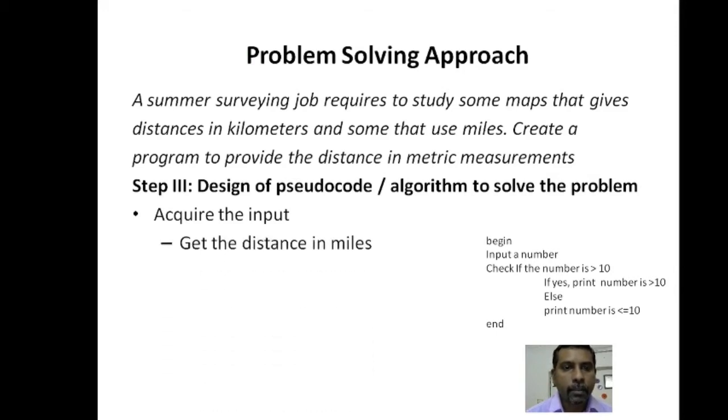First is acquire the input. In our problem, what is the input? The input is miles, so you need to acquire the distance in miles. Second step is processing or computing the data. This is in general any program. You represent the second step as process or compute the data. In our program, we are going to convert this distance in miles into kilometers. That is what we are going to compute.